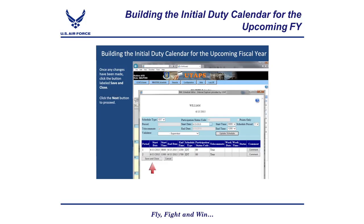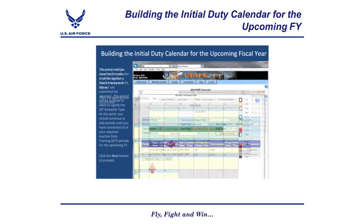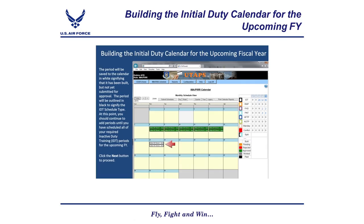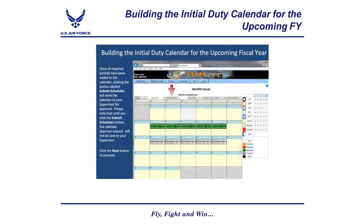The period will be outlined in black to signify IDT Schedule Type. At this point, continue to add periods until you have scheduled all of your required inactive duty training periods for the upcoming fiscal year. Once all required periods have been added, clicking the 'Submit Schedules' button will send the calendar to your supervisor for approval. Please note that until you click Submit Schedules, the calendar approval request will not be sent to your supervisor. Once submitted, periods will be displayed in yellow, signifying pending approval. Other colors on the calendar signify: green for approved, red for rejected, gray for worked, and black for periods that have been sent to pay.